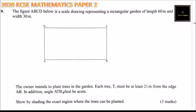The owner intends to plant trees in the garden. Each tree T must be at least 21 meters from the edge AB. In addition, angle ATB must be acute. And show by shading the exact region where the trees can be planted and you get three marks.